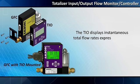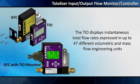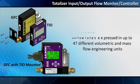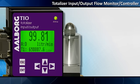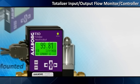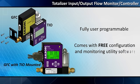The TIO displays instantaneous total flow rates expressed in up to 47 different volumetric and mass flow engineering units. The compact design makes it ideal for field use or for mounting with a unit or on a wall, yet the 13-millimeter digits on the display are always easy to read. It's fully user-programmable, and the TIO comes with free configuration and monitoring utility software.